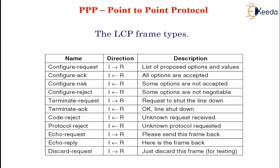The options that can be negotiated include setting the maximum payload size for data frames, enabling authentication and choosing a protocol to use, enabling line quality monitoring during normal operation, and selecting various header compression options. This concludes the discussion of point-to-point protocol. Thank you.